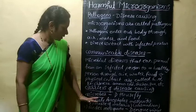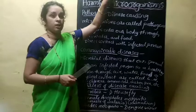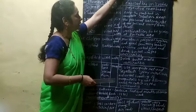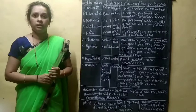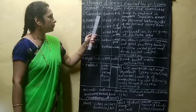Now we will discuss some diseases caused by microbes in human beings. First, tuberculosis — it is a bacterial disease. Its mode of transmission is through air.